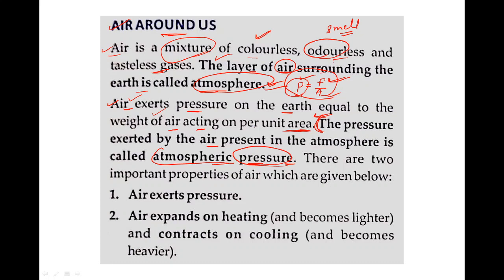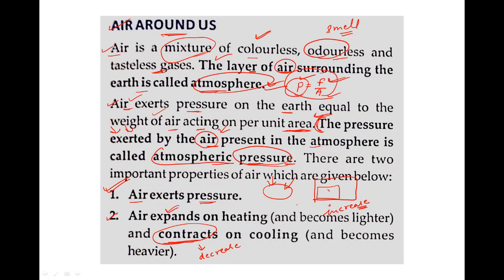There are two important properties of air. First, air exerts pressure. Second, air expands on heating — if you heat the air, the volume increases. And air contracts on cooling — there is a decrease in the volume of air when it is cooled. When air is frozen or cold, the volume becomes compact.